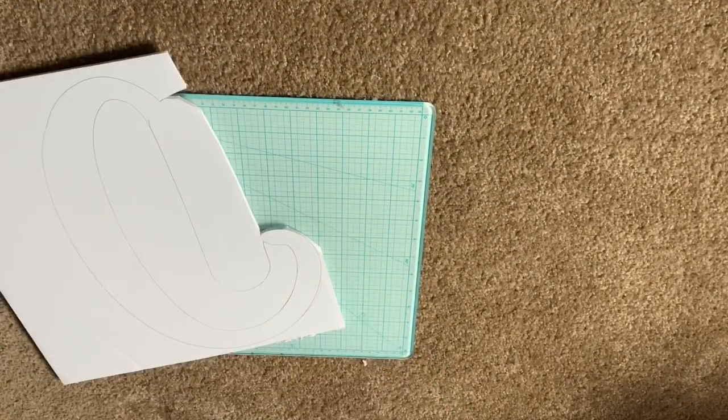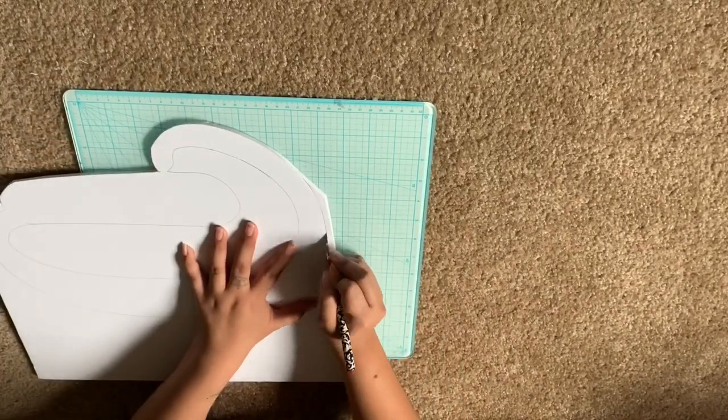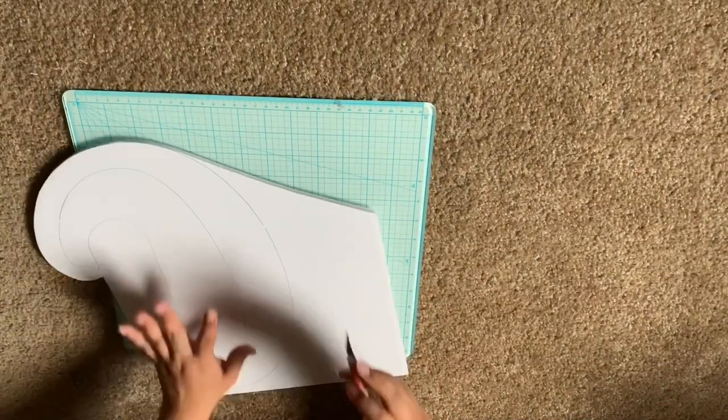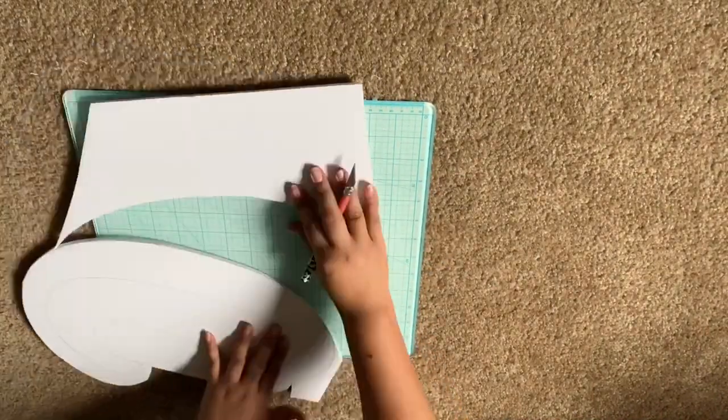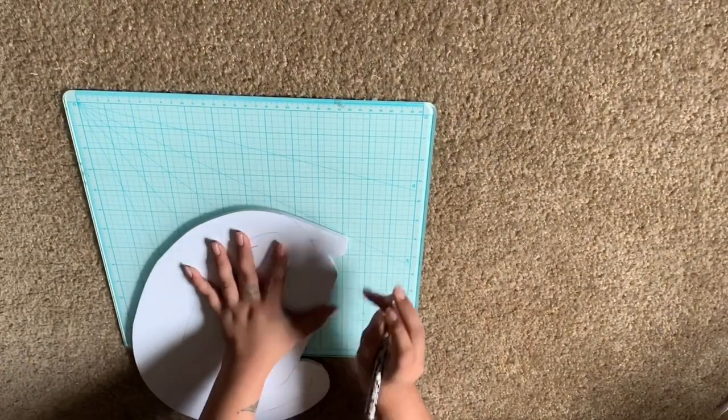You want to work in really small sections. You kind of want to make straight cuts and move your board as you're going, if that makes sense. If you have long lines like the one I just did, you can just do a straight cut and it'll cut pretty good.